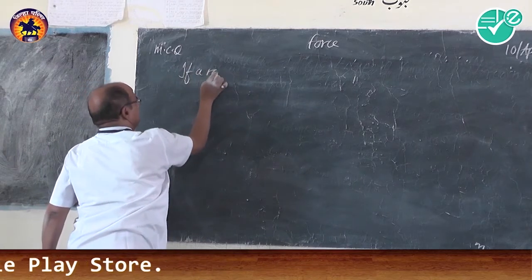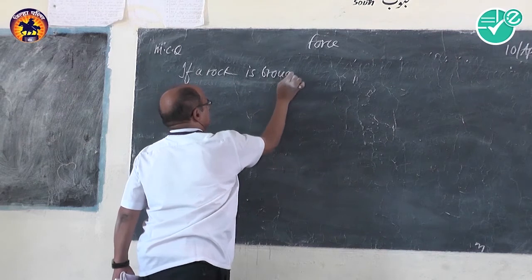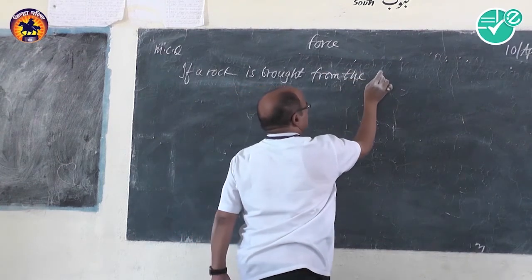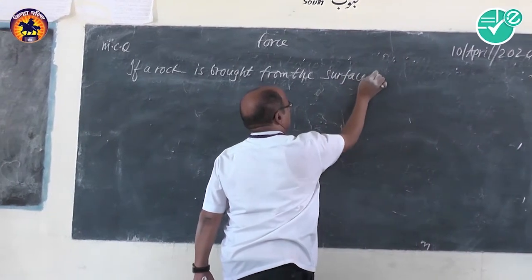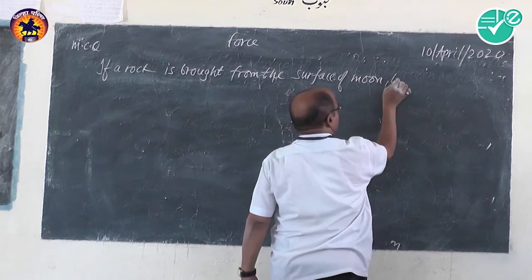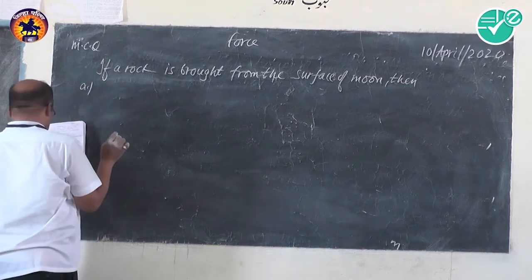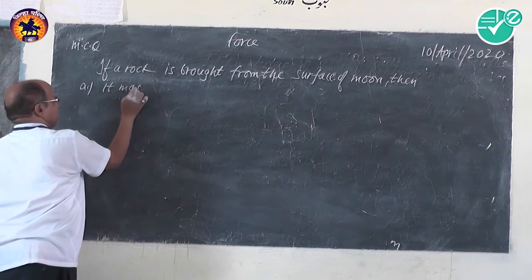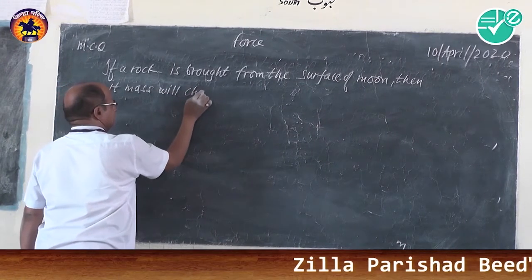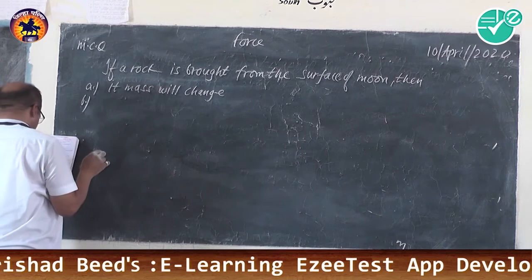Problem: If a rock is brought from the surface of the moon to the earth, what changes? The options are: A — its mass will change; B — its weight will change, not the mass; C — both mass and weight will change; D — both mass and weight will remain the same.